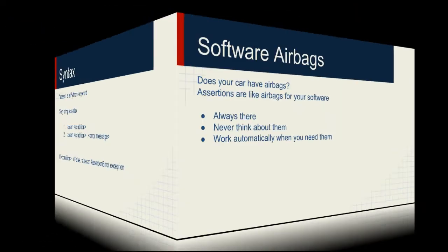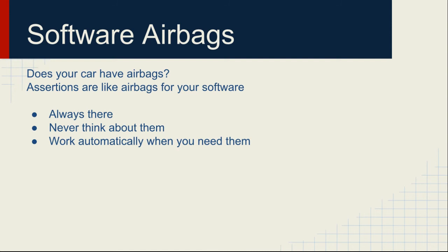Typically your program will just halt at that point with an error message on the screen. I like to compare the assert statement to having airbags in your car — it's kind of a safety feature. Airbags are convenient because they're always there, you never really have to think about them, but when you do need them they just work automatically. The assert statement is like that: you place them in your code, normally they don't get executed, but when you do have an error they get triggered automatically and you'll see exactly where the error occurred and what it is.